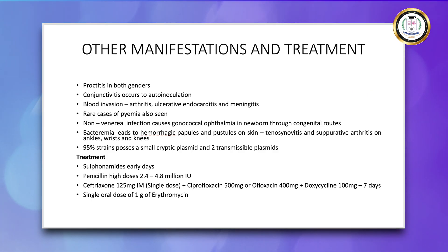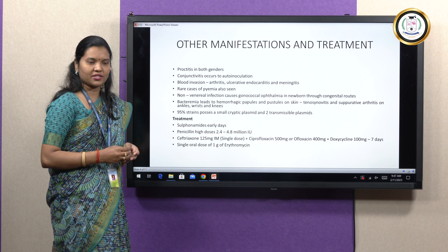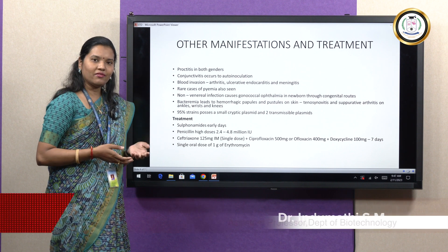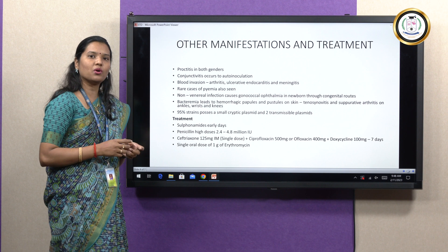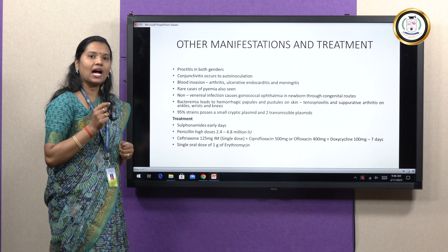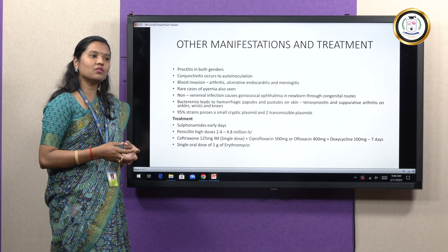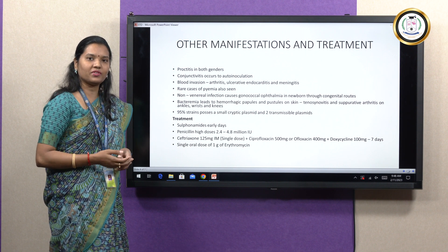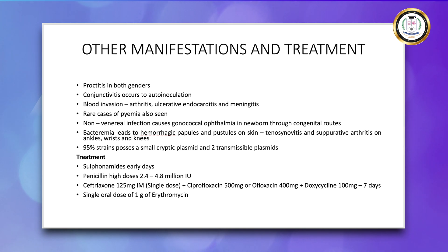Blood invasion by the organisms leads to metastatic lesions like arthritis, ulcerative endocarditis — meaning ulceration seen in the internal lining of the heart — and meningeal involvement, which is rare. Pyemia is also a complication of gonorrhea. Non-venereal infection generally occurs through congenital transfer from mother to fetus, causing gonococcal ophthalmia affecting the fetus's eyes. Bacteremia leads to papules and pustules on forearms, legs, and other skin regions, as well as tenosynovitis — inflammation of the tendon sheath — and suppurative arthritis affecting the knees, wrists, and ankles.